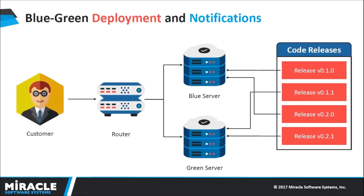Blue-green deployment is a technique in which we run two identical environments in order to reduce the risk of failure after deploying a new release. We have two identical environments: blue and green. If we deploy the new release V0.1.1 to the green server, then we will route all traffic to the green server and verify all the functionalities. In case we observe any bugs or failure in the test cases, we can simply roll back the traffic to the old version, V0.1.0, and within a short span of time, customers will experience the old application functionality.